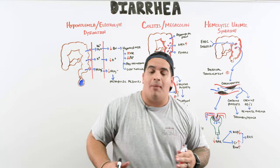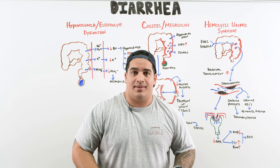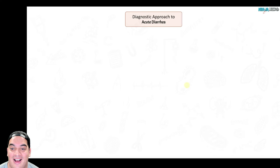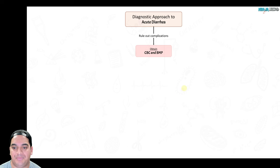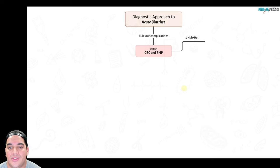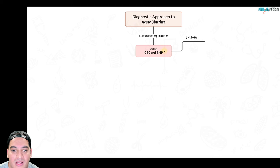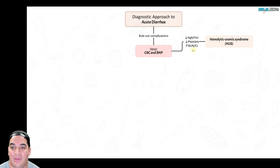Now for diagnostics. We've covered complications of acute diarrhea — hypovolemia, hypokalemia, metabolic acidosis, HUS, toxic megacolon, and perforation. First, get a CBC and BMP: these help identify HUS (low hemoglobin, low platelets, high creatinine) and complications like AKI, hypokalemia, and hypovolemia.